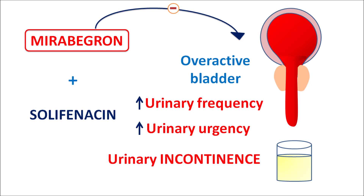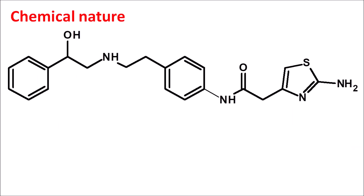Today we are going to see how Mirabegron acts, its chemical nature, important precautions, side effects, and doses. Regarding the chemical nature, this is the structure of Mirabegron. Here we can observe an amide as the principal functional group. Giving the numbering — one and two — it is simply an acetamide derivative.